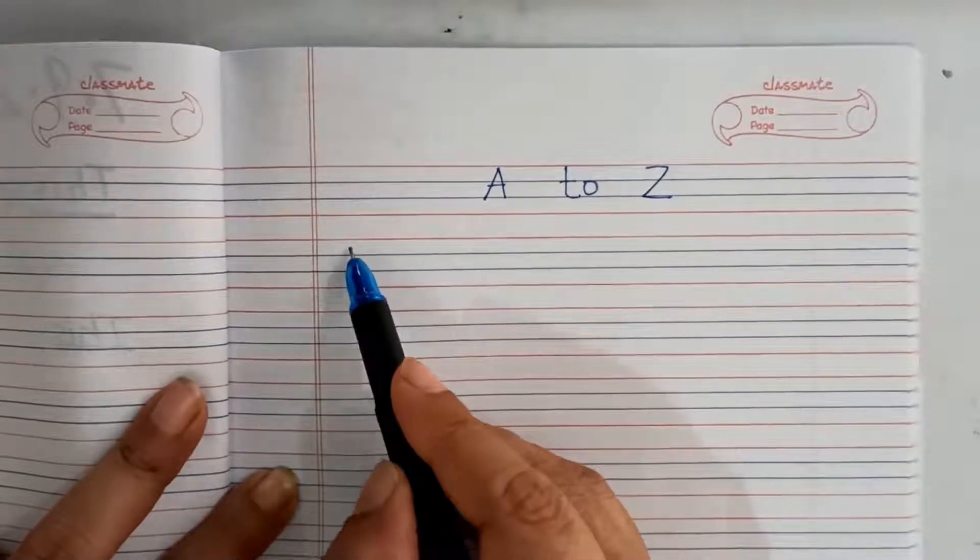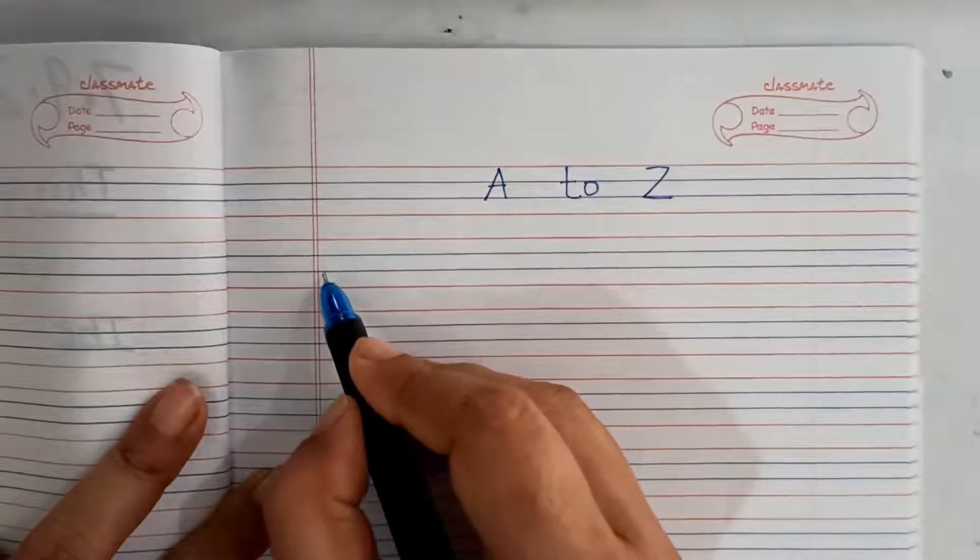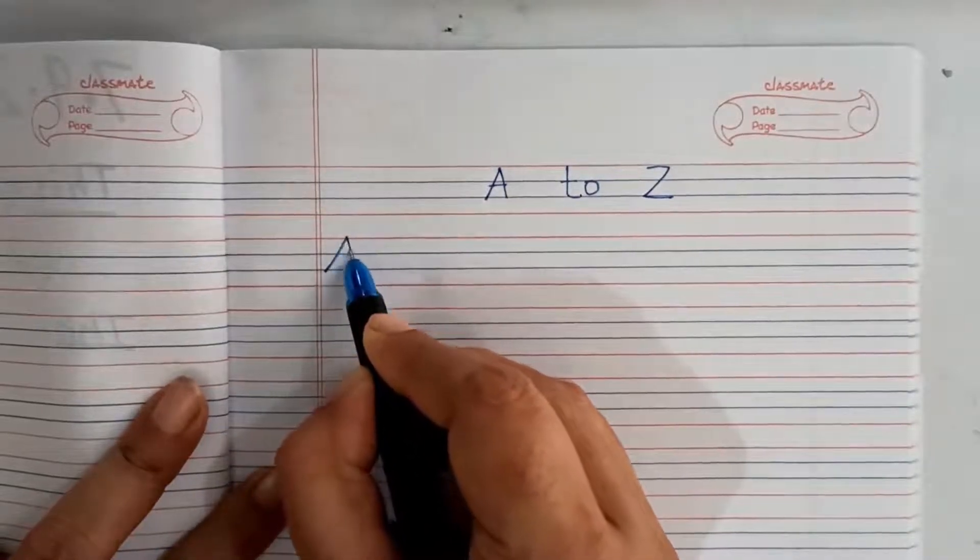See, four, one, two, three lines are there. What you have to do? You have to start from this blue to red like this.